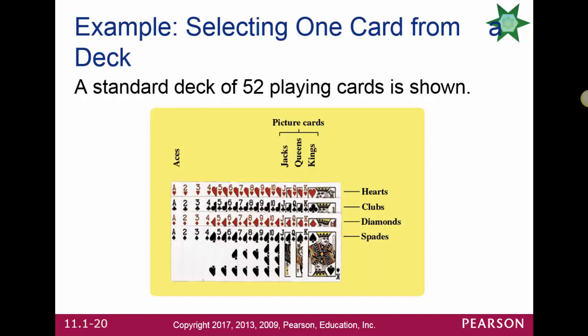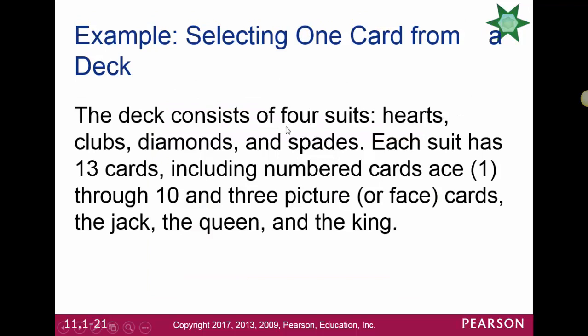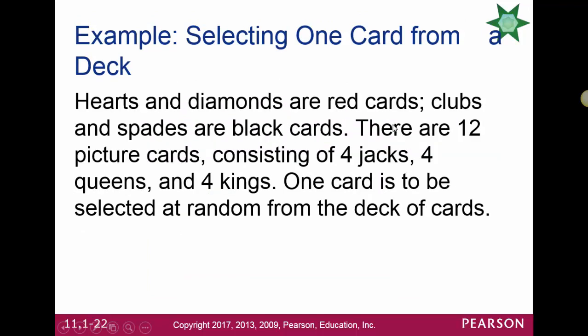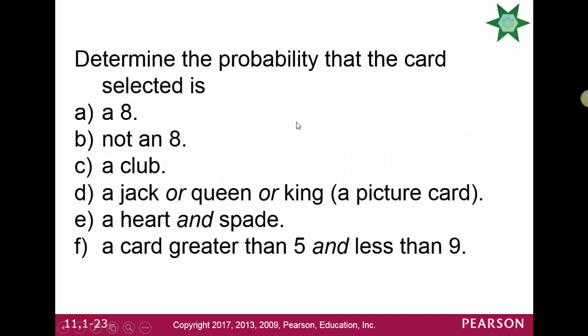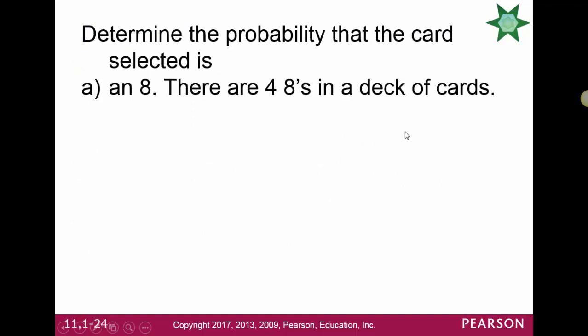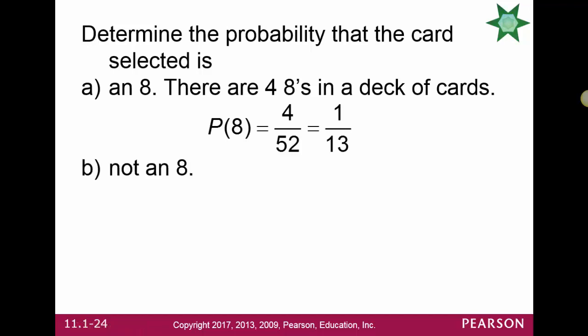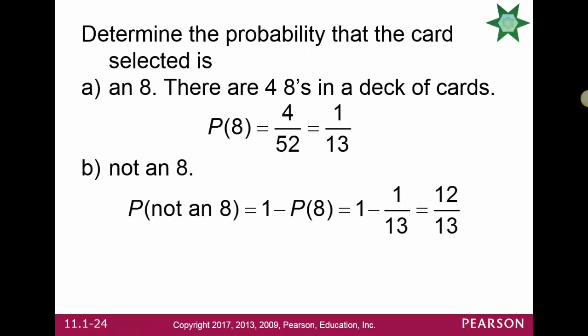Let's select one card from a standard deck of 52 cards. There are 52 cards, 4 suits — hearts and diamonds are red, clubs and spades are black — and kings, queens, and jacks are called picture or face cards. The probability of getting an 8 is 4 out of 52, or 1 out of 13. The probability of not getting an 8 is 1 minus 1/13, or 12 out of 13. The probability of getting a club is 13 out of 52, or 1 quarter.